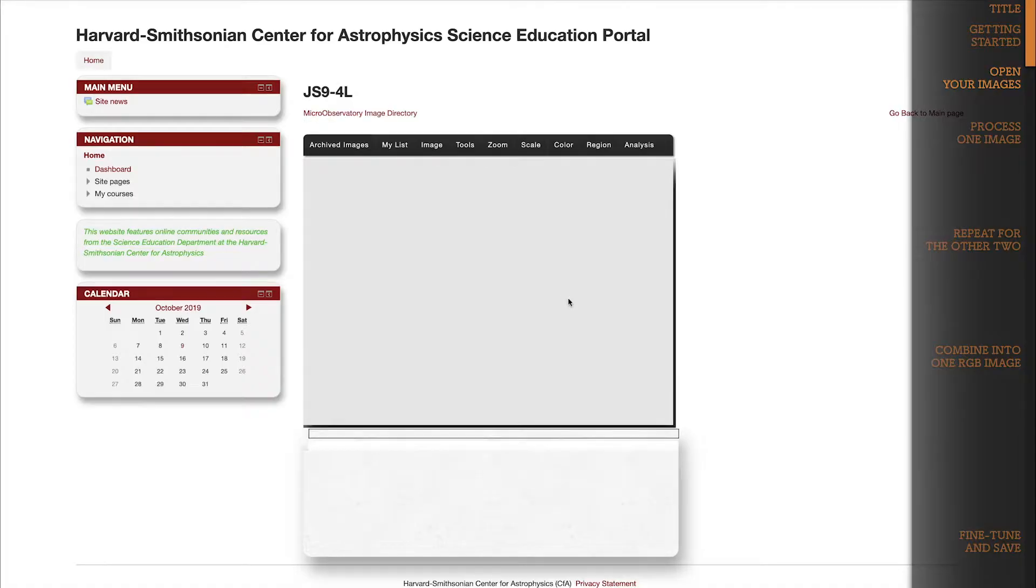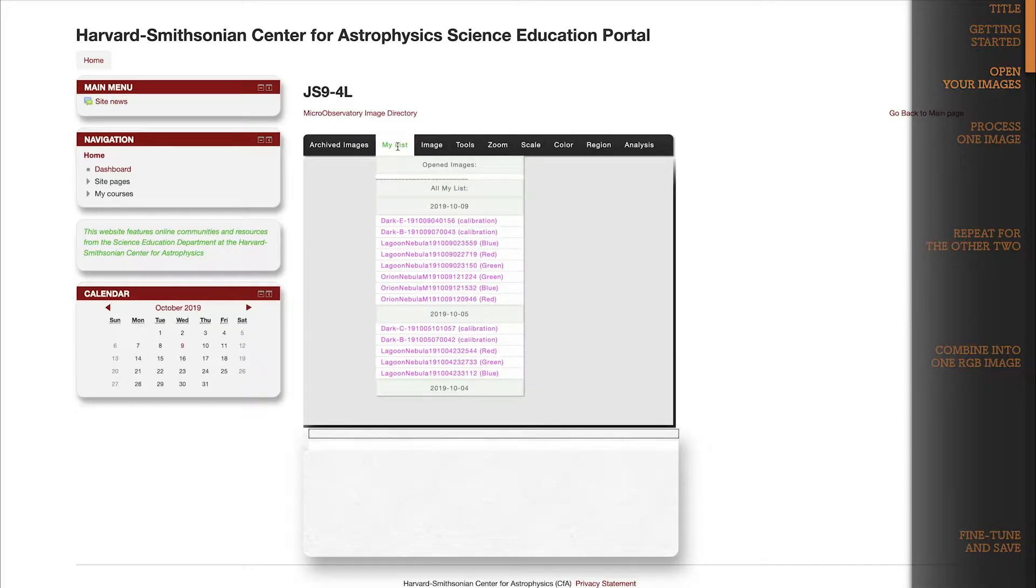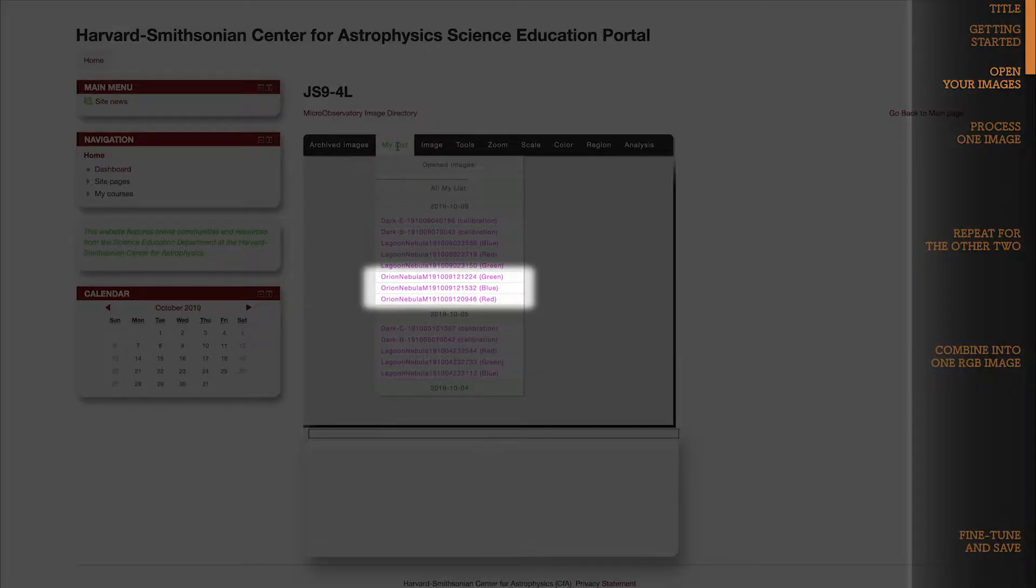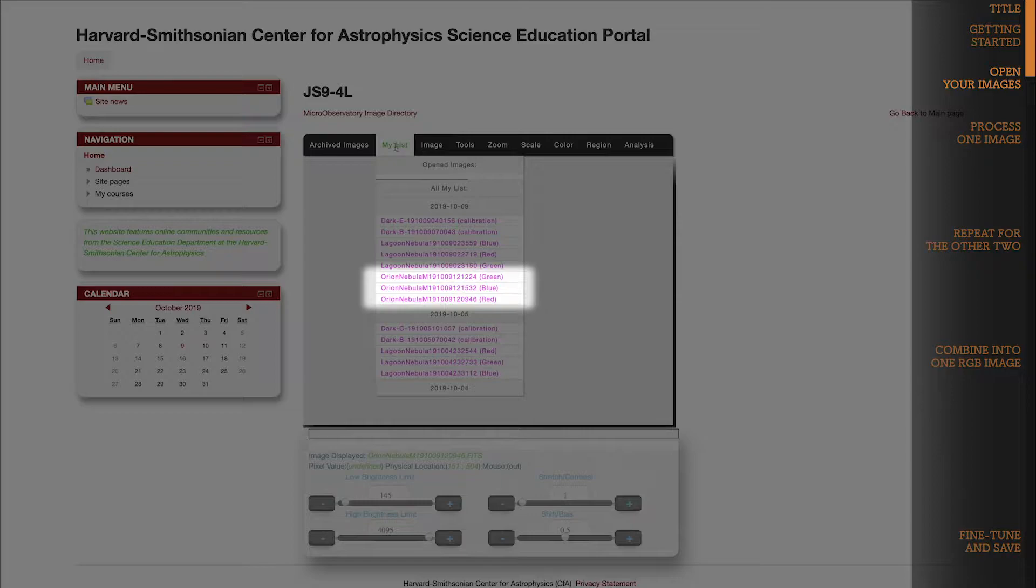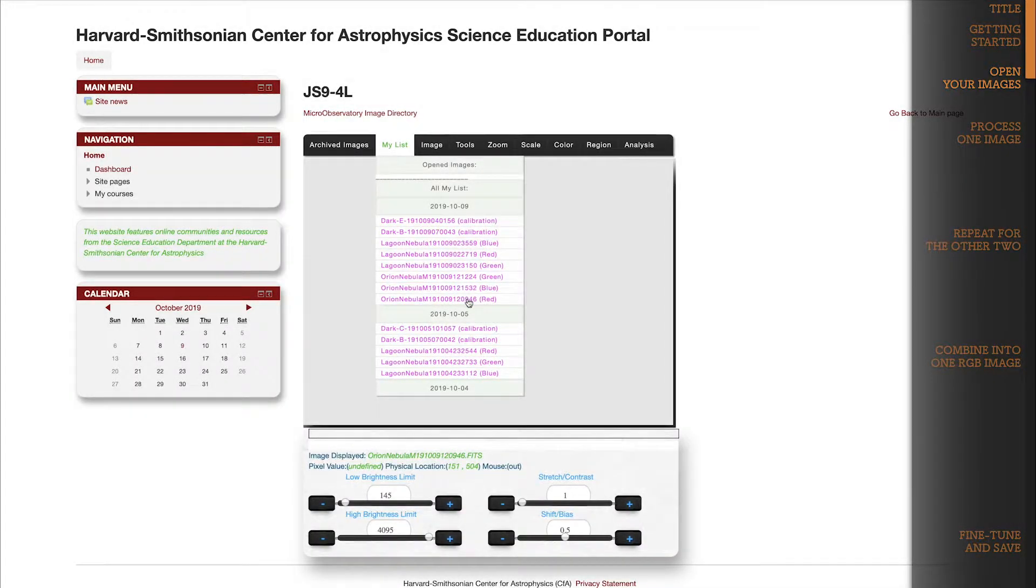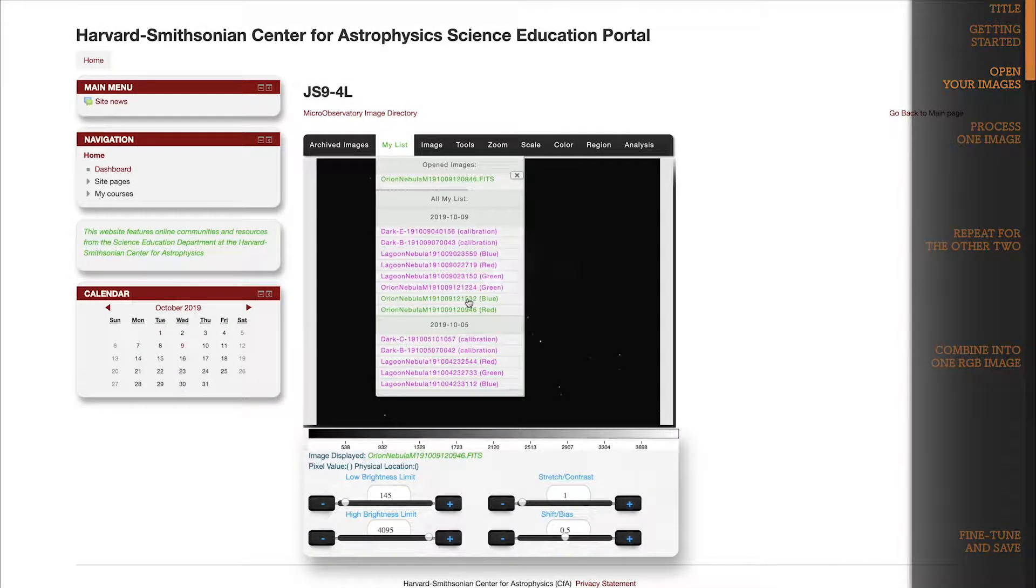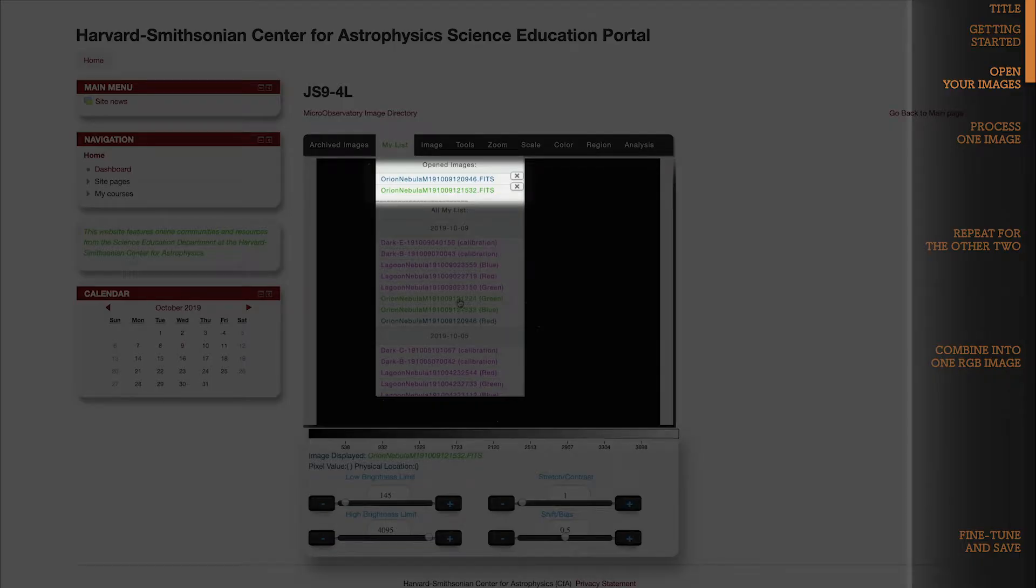Okay, so we're ready to start processing in JS9. I'll go back to the My List dropdown to find the three RGB images I requested. Here they are, piled up in the middle of my dropdown. I'll click on each one, and as I do, each one opens in JS9 and pops up here under Opened Images.